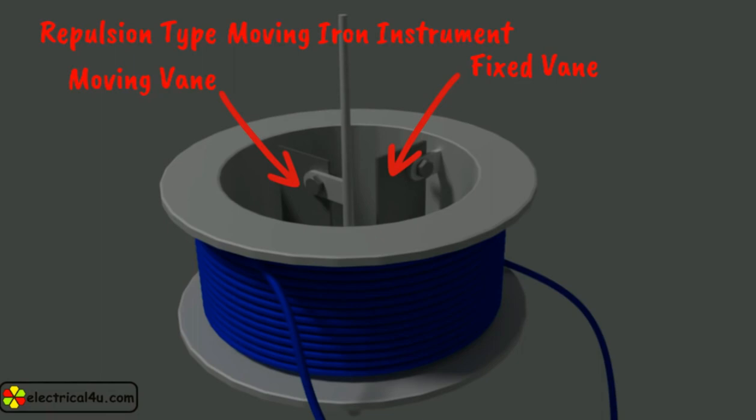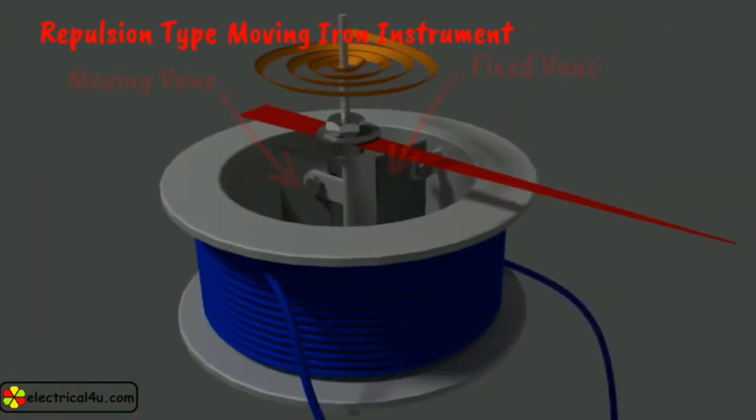the two vanes are magnetized, developing similar polarity at the same ends. Consequently, repulsion takes place between the vanes and the movable vane causes the pointer to move over the scale.